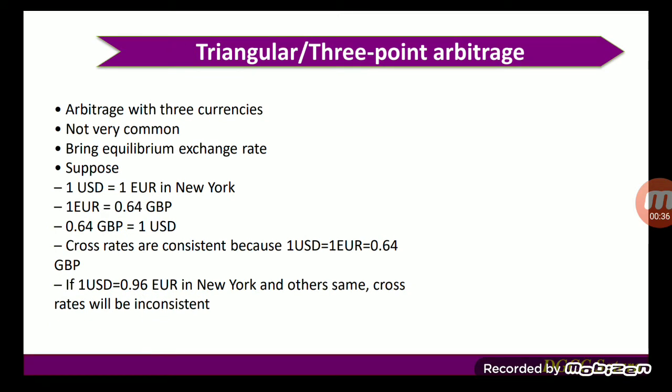Triangular or three-point arbitrage involves arbitrage with three currencies. It is not very common, but it brings equilibrium to the exchange rate. For example: suppose one dollar equals one rupee in New York, and one euro equals 0.64 Great Britain pounds.